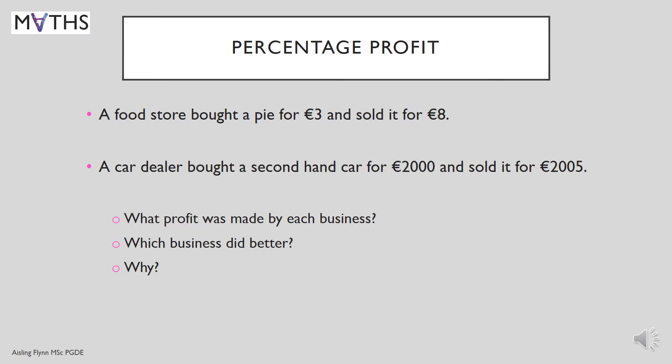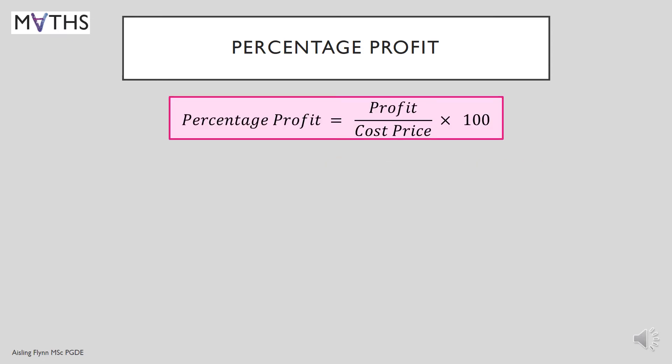Firstly, you wouldn't sell so many cars as you might pies. Also, by the time you paid your salesman, give commission and all the overheads, you wouldn't be doing very well. So that is the reason we don't measure profit by euros alone. We like to use percentage profit — it makes more sense.